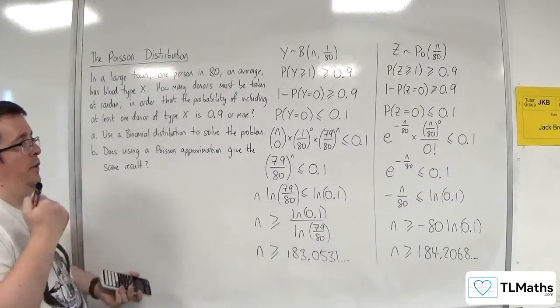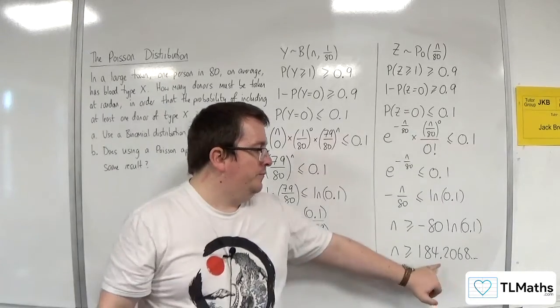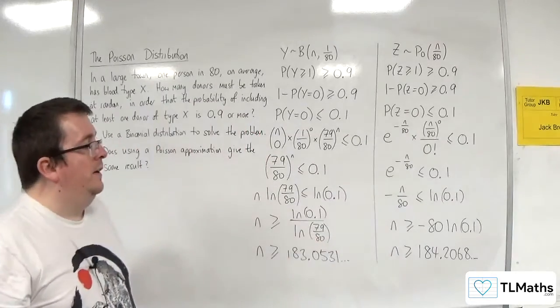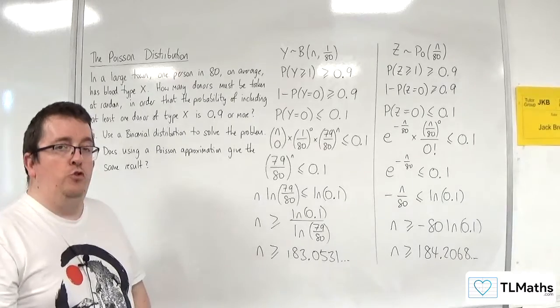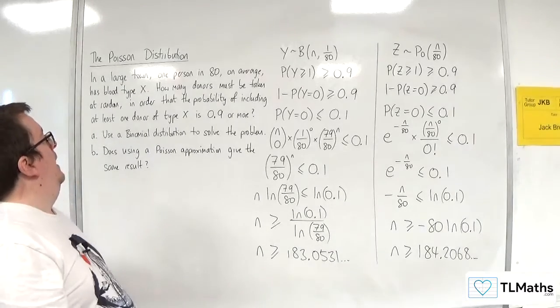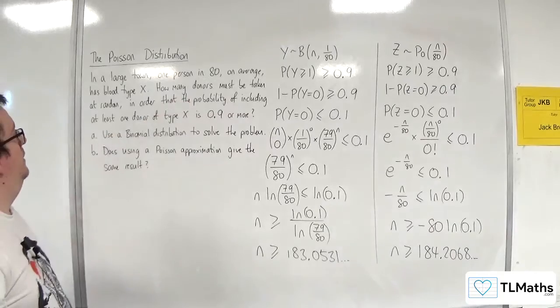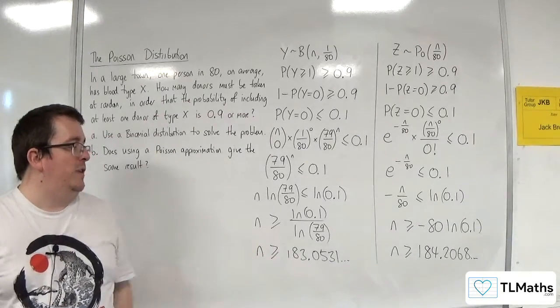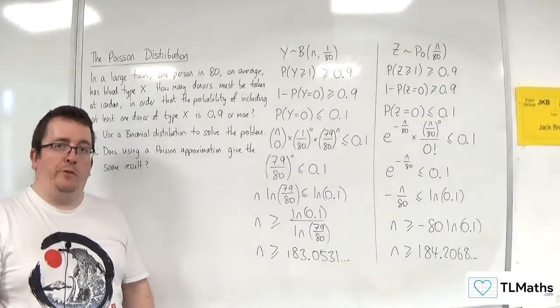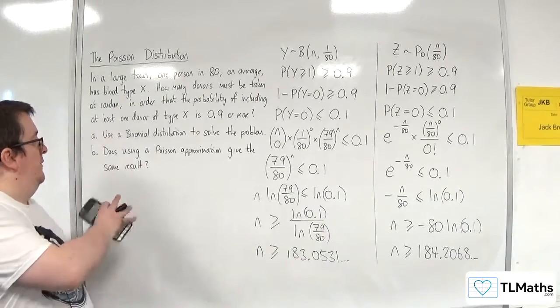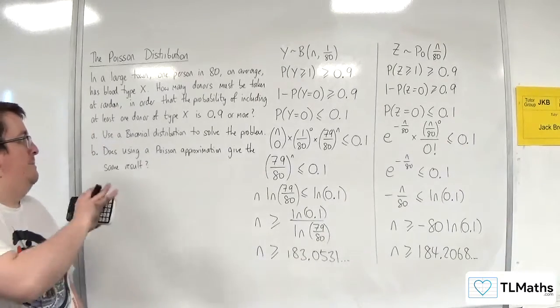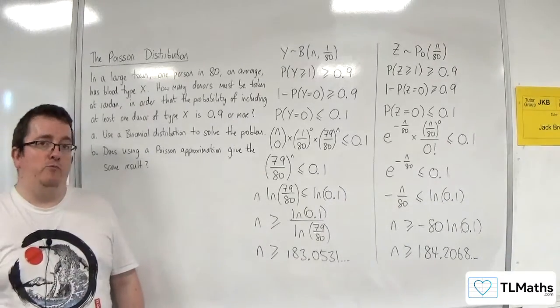So if I use the Poisson approximation, it actually turns out that I would need at least 185 donors to be taken at random, rather than at least 184 that the binomial model suggests. So the answer, although close, they don't give exactly the same result.